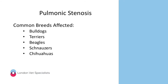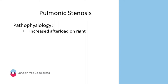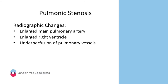Pulmonic stenosis is most commonly seen in bulldog-type breeds, though it's been reported in Terriers, Beagles, Schnauzers, and Chihuahuas. The narrowed pulmonic outflow causes increased afterload on the right side of the heart. Radiographically, that manifests as an enlarged main pulmonary artery, an enlarged right ventricle, and underperfusion of the pulmonary vessels.